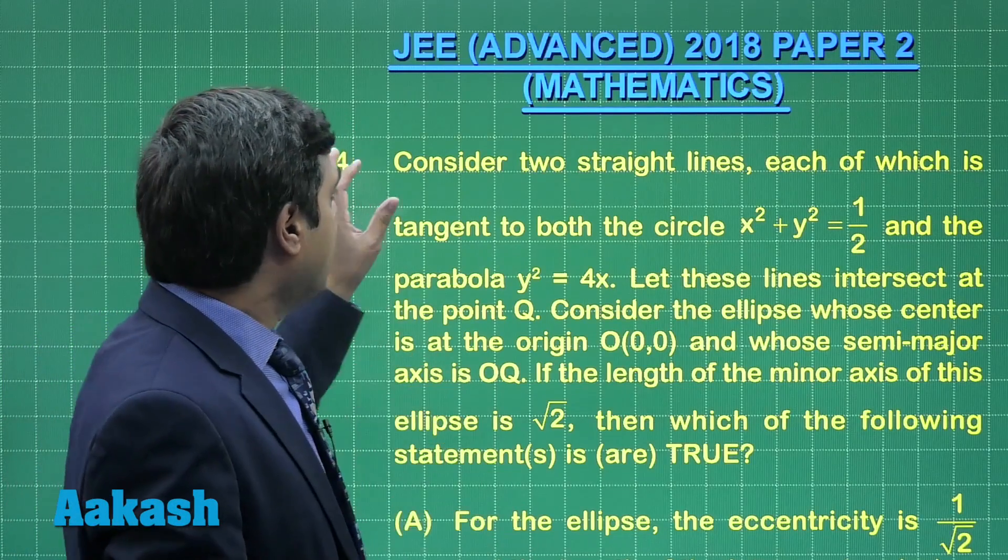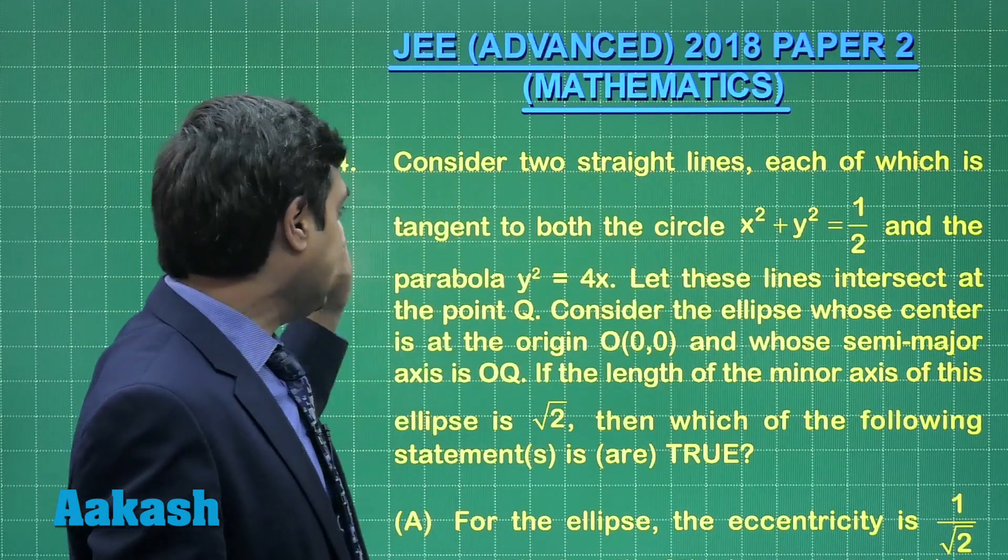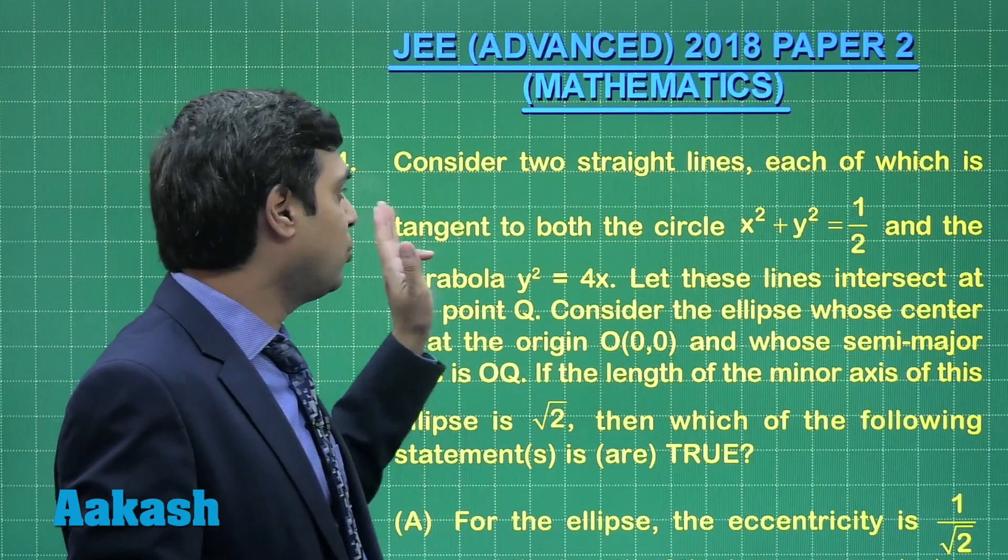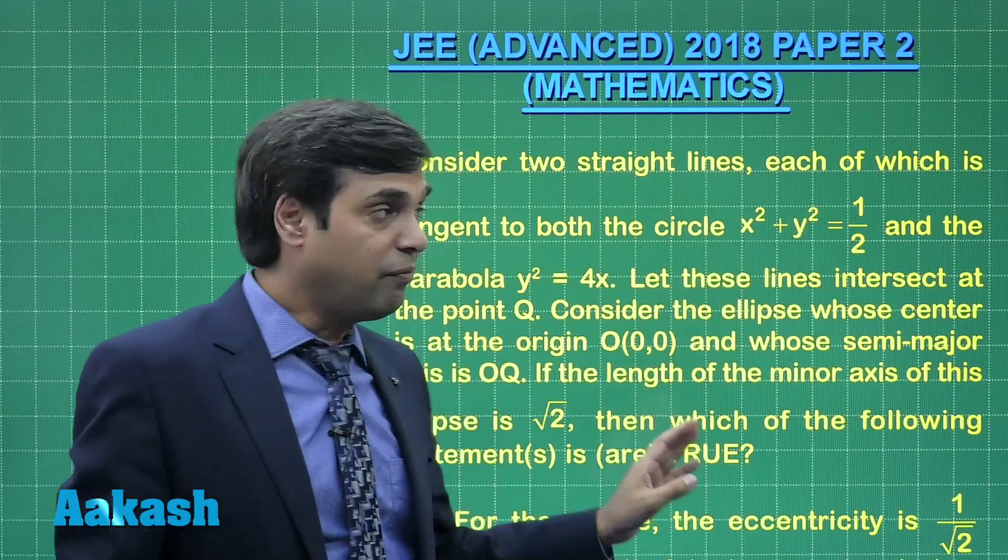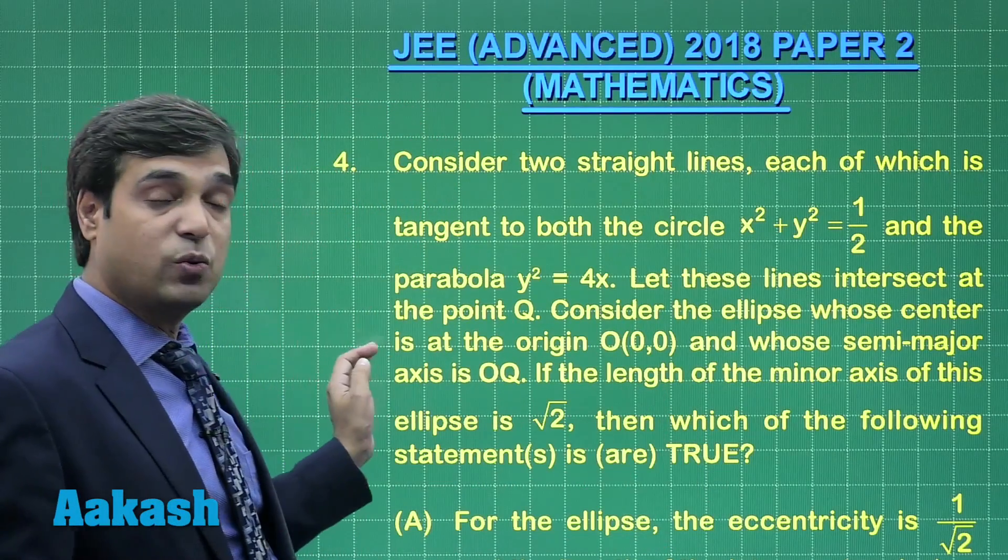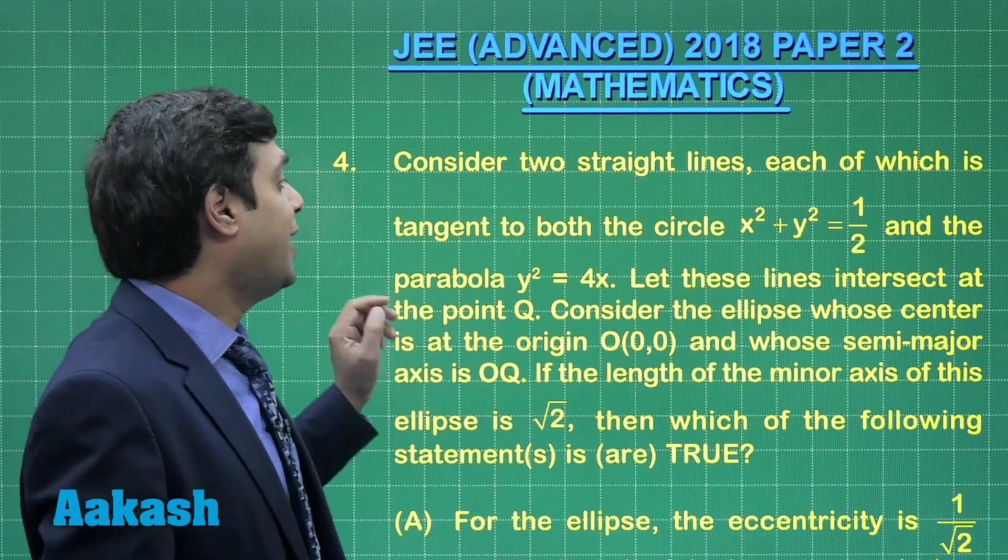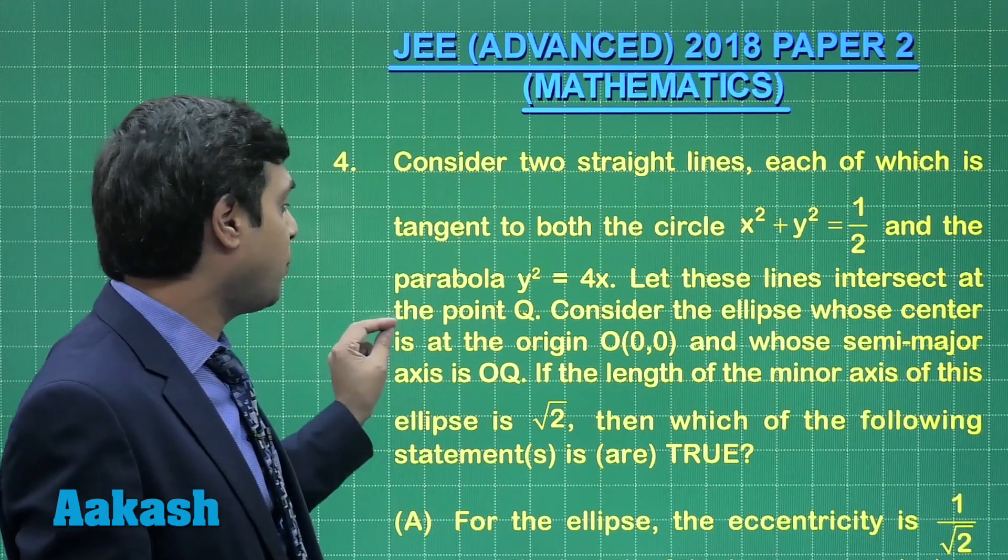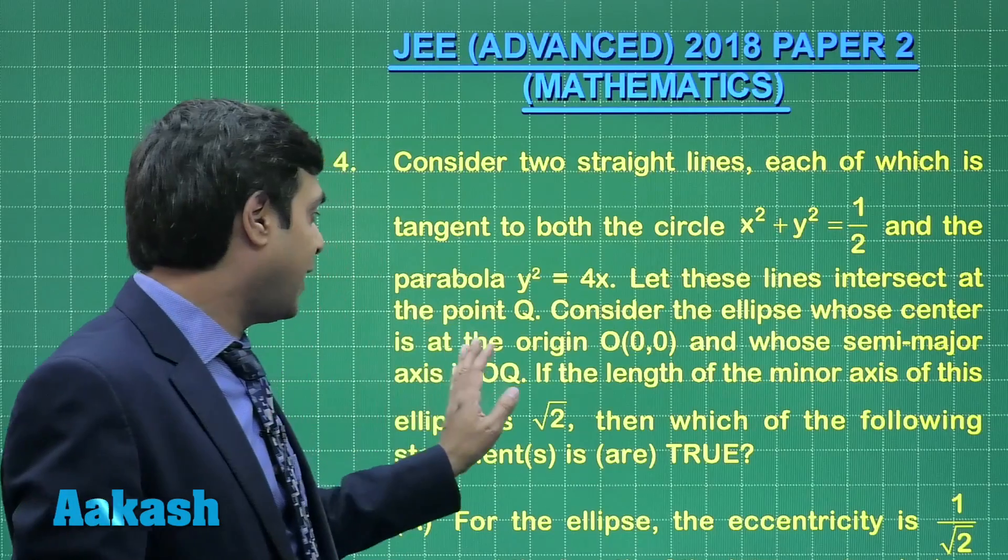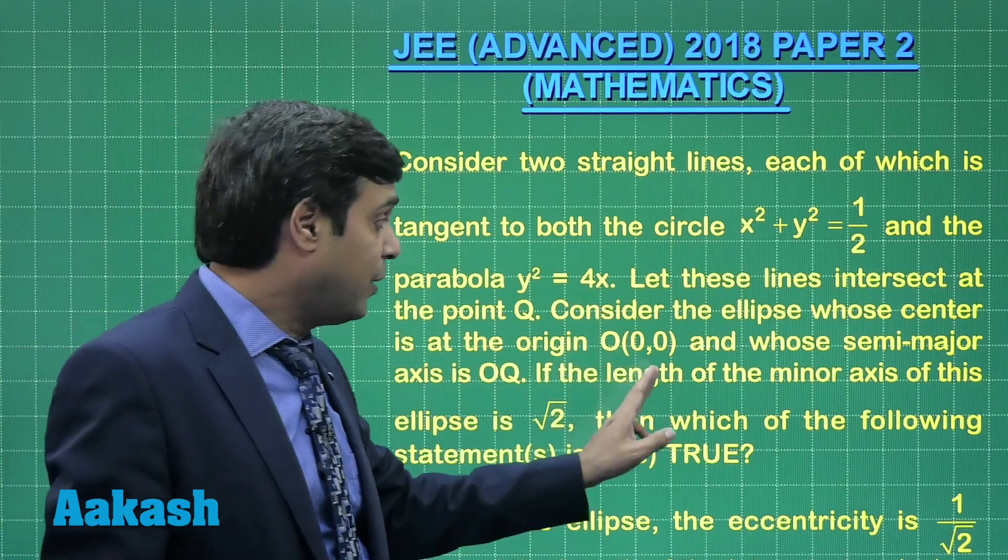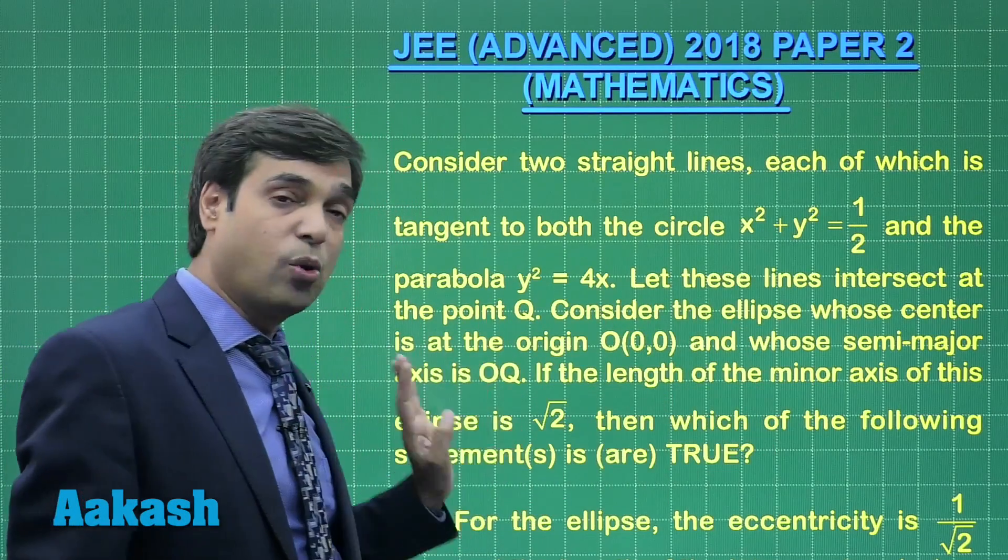Let us take question number 4. Consider two straight lines, each of which is tangent to both the circle x² + y² = 1/2 and the parabola y² = 4x. Let these lines intersect at the point Q. Consider the ellipse whose center is at the origin O and whose semi-major axis is OQ.